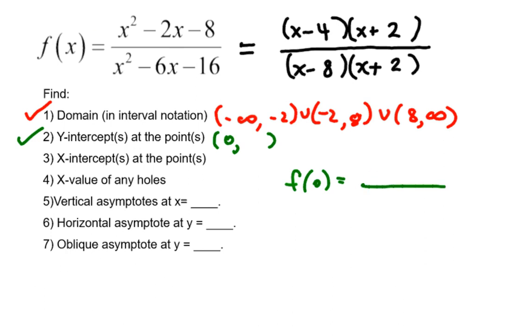So in the top, I would have 0 squared minus 2 times 0 minus 8. And in the bottom, I would have 0 squared minus 6 times 0 minus 16. All of this stuff cancels to 0, and then I have negative 8 divided by negative 16, which simplifies to positive 1 half. So that is the y-value of my ordered pair where the graph crosses the y-axis.